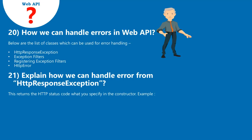Question 21: Explain how we can handle errors from HttpResponseException. This returns the HTTP status code that you specify in the constructor. Example shown below.